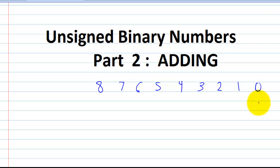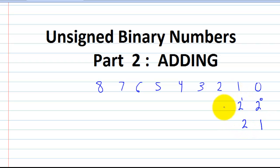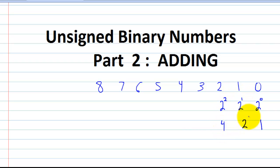So if you have a one in the zero position, the way you find out what value it is, you do two raised to whatever that position is. So two to the zero is just one. Two to the first power is two. Two squared — because this is the second position — you get four. As you've noticed, we've done the first three, and each one doubles from the previous.